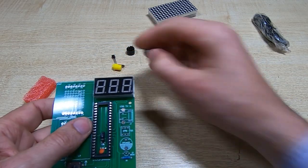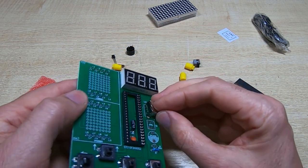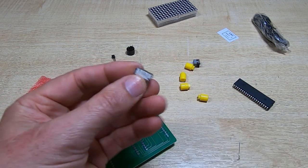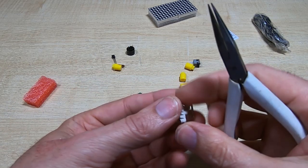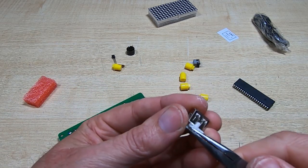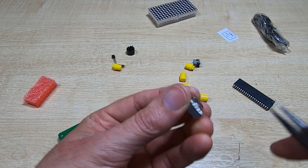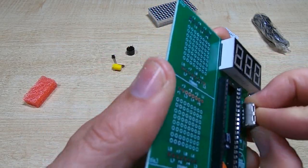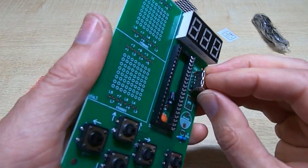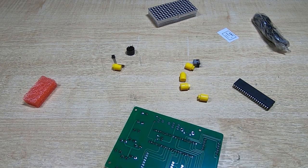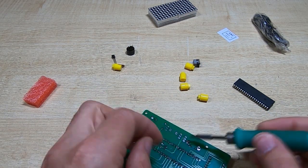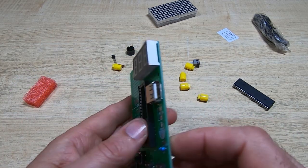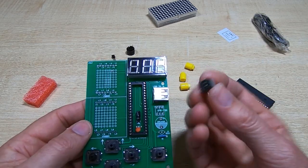Okay, next thing is we'll fit the USB connector. This kit really could benefit from better packaging. The pins on almost every component have been bent, so I'll just straighten these out as well so I can get it into the board. Okay, that's the socket fitted. Next thing is the switch.